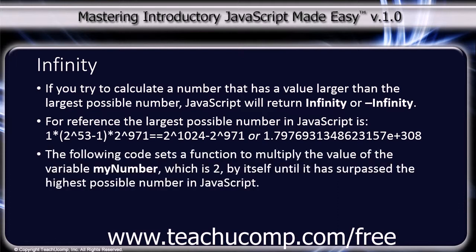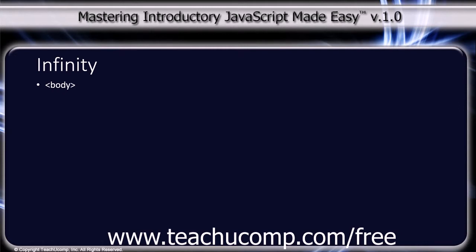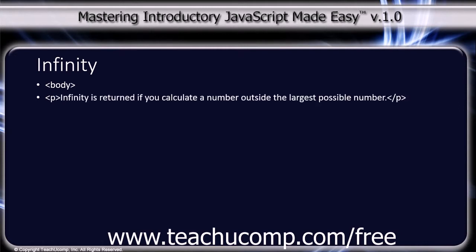The following code sets a function to multiply the value of the variable myNumber, which is 2, by itself until it has surpassed the highest possible number in JavaScript. The body tag. A paragraph tag: "Infinity is returned if you calculate a number outside the largest possible number." Close paragraph tag.